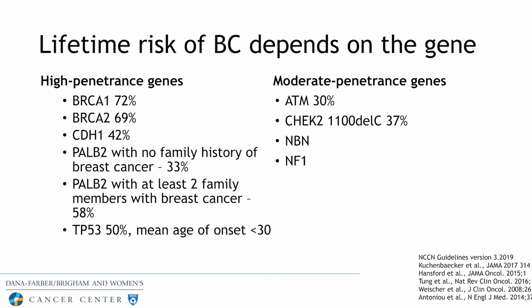What we do with hereditary cancer genes depends on the gene. High-penetrant genes like BRCA1 and 2 carry a lifetime breast cancer risk of 50–85%, compared to 12% in the general population. Moderate-penetrant genes — including ATM, CHEK2, NBN, and NF1 — confer an increased risk but not as high as BRCA1 and 2. Other high-penetrant genes include CDH1, PALB2, and TP53. We consider a person to be high risk if their lifetime risk is greater than 20%, while high-penetrant genes generally carry a risk above 40%. Clinical management is individualized based on the patient and the specific gene.